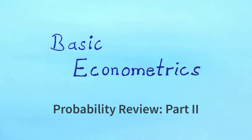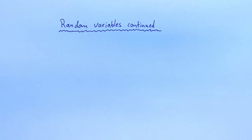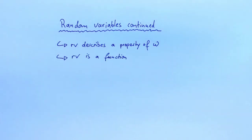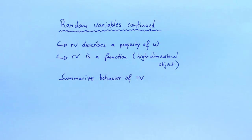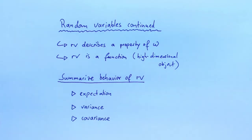In this video I'll continue talking about random variables. We already know that random variables describe properties of a random sample. A random variable is a function, and functions are very complex objects. In this video we look at ways to summarize the potentially complex behavior of a random variable. We will look at the expectation, the variance, and the covariance. The expectation is a measure of the center of the distribution of a random variable. The variance is a measure of the spread of the distribution of a random variable. The covariance quantifies the co-movement between two random variables.